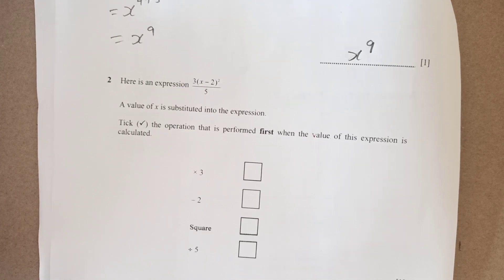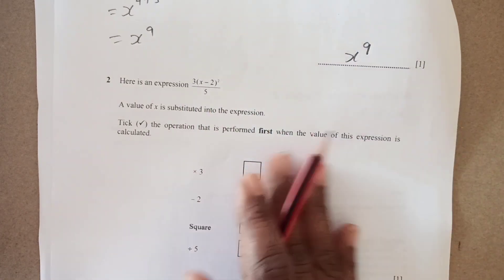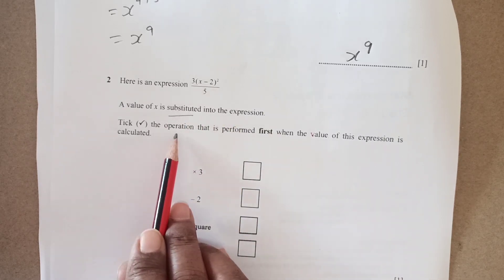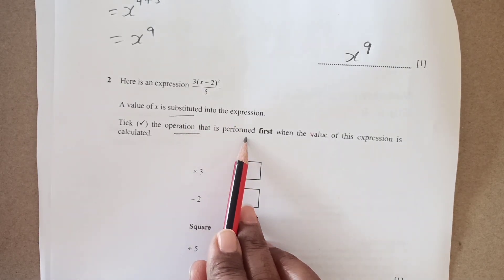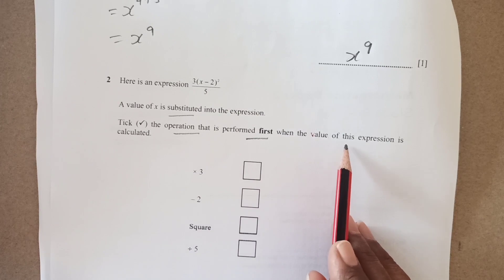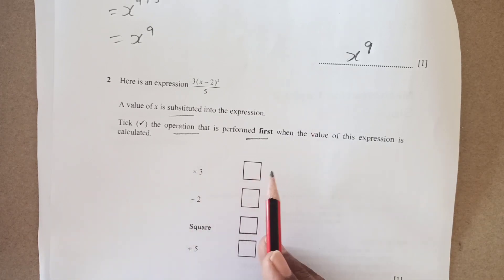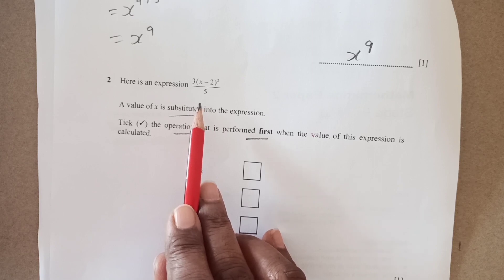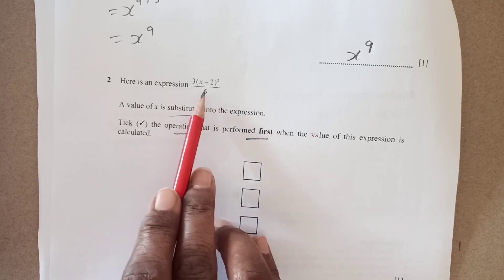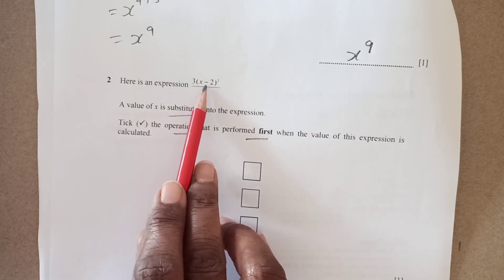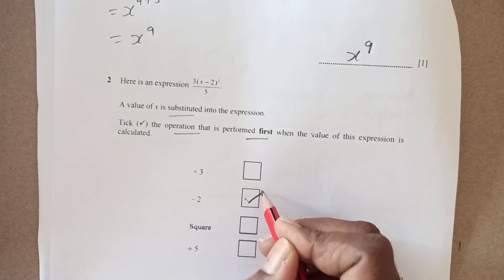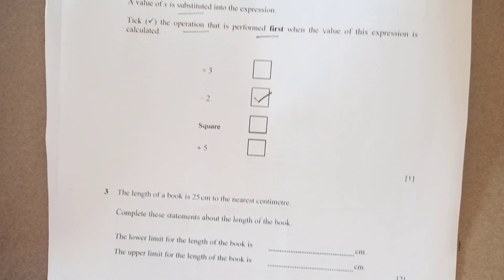Part 2 we have here. Here is an expression. The value of x is substituted into the expression. Take the operation that is performed first when the value of this expression is calculated. Whenever you will do here, the first thing that you need to do is perform on x inside the bracket. Inside the bracket we have minus 2. So we are going to take on minus 2 here right.